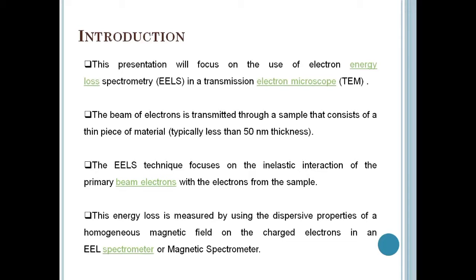Interaction of the beam with the sample enables the operator to learn about the sample, such as chemical elements present, stoichiometry, energy levels, electronic structure, and more. The EELS technique focuses on the inelastic interaction of the primary electrons with the electrons from the sample. The energy loss of the primary electrons commonly used in EELS is in the range of 0 eV to 3 keV. This energy loss is measured using the dispersive properties of a homogeneous magnetic field on the charged electrons in an electron energy loss spectrometer, or magnetic spectrometer.